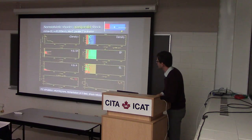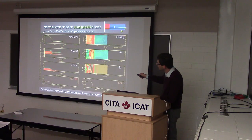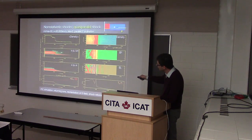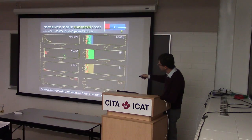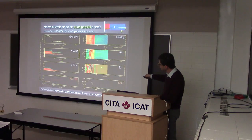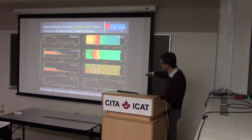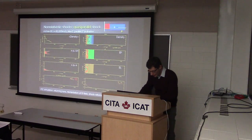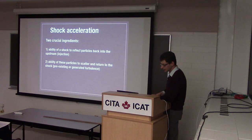Here is what a quasi-parallel shock looks like. Initially the magnetic field is along the direction of the flow. You see a density compression and reflected ions going back towards upstream. They're also driving waves, so you see magnetic fluctuations starting to appear in front of the shock — circularly polarized waves.